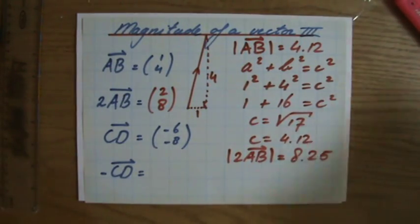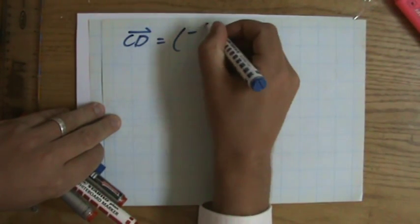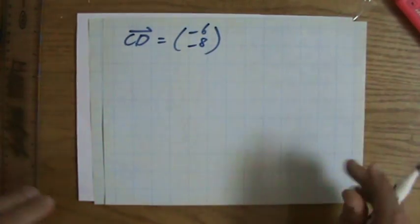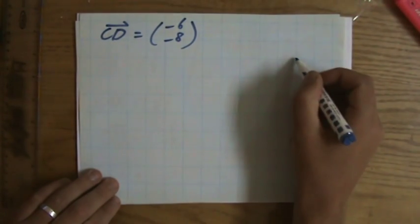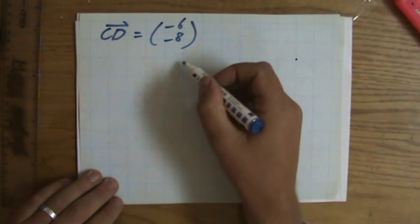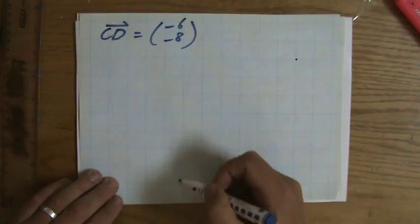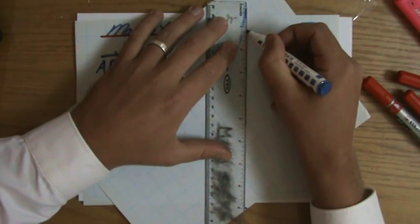CD, minus 6, minus 8. I'm just going to continue here. Pythagoras theorem, but please don't make any silly mistakes. Minus 6, minus 8. 1, 2, 3, 4, 5, 6. 1, 2, 3, 4, 5, 6, 7. Doesn't really fit. I'm going to cheat a little bit over there. This is the vector.